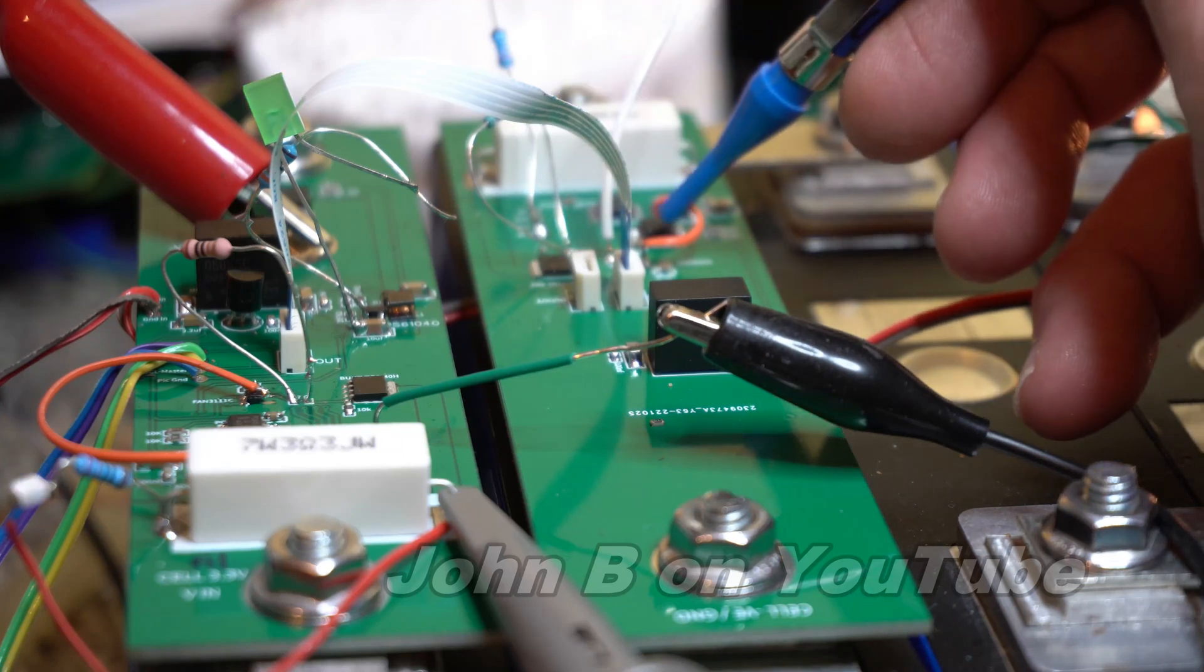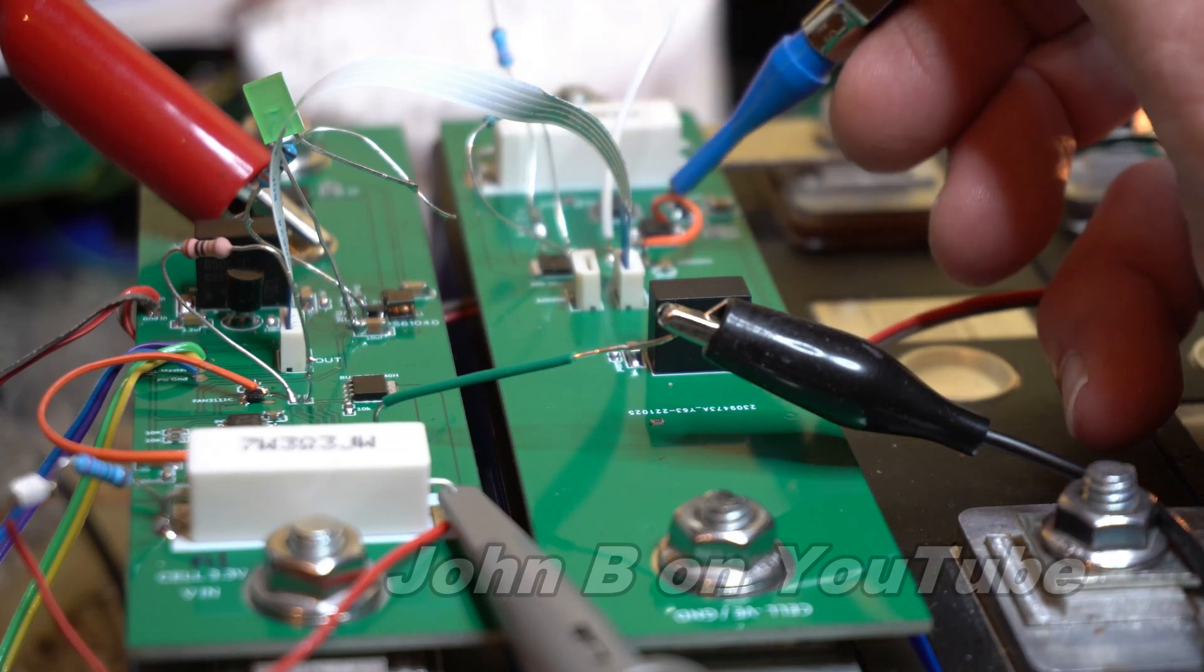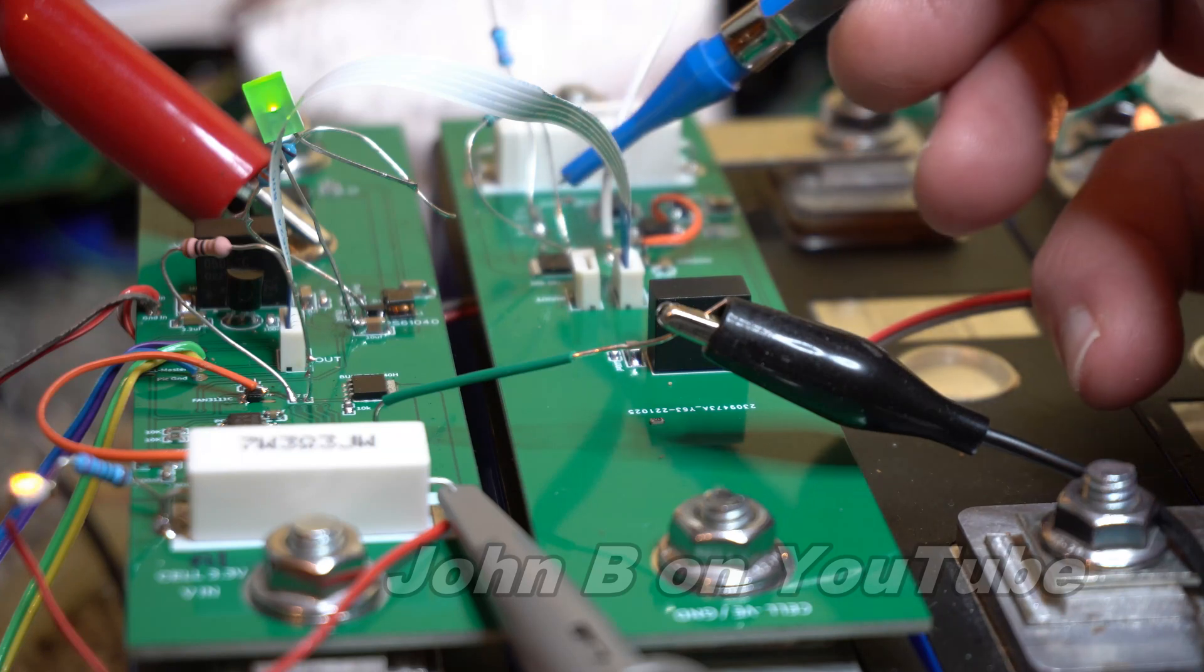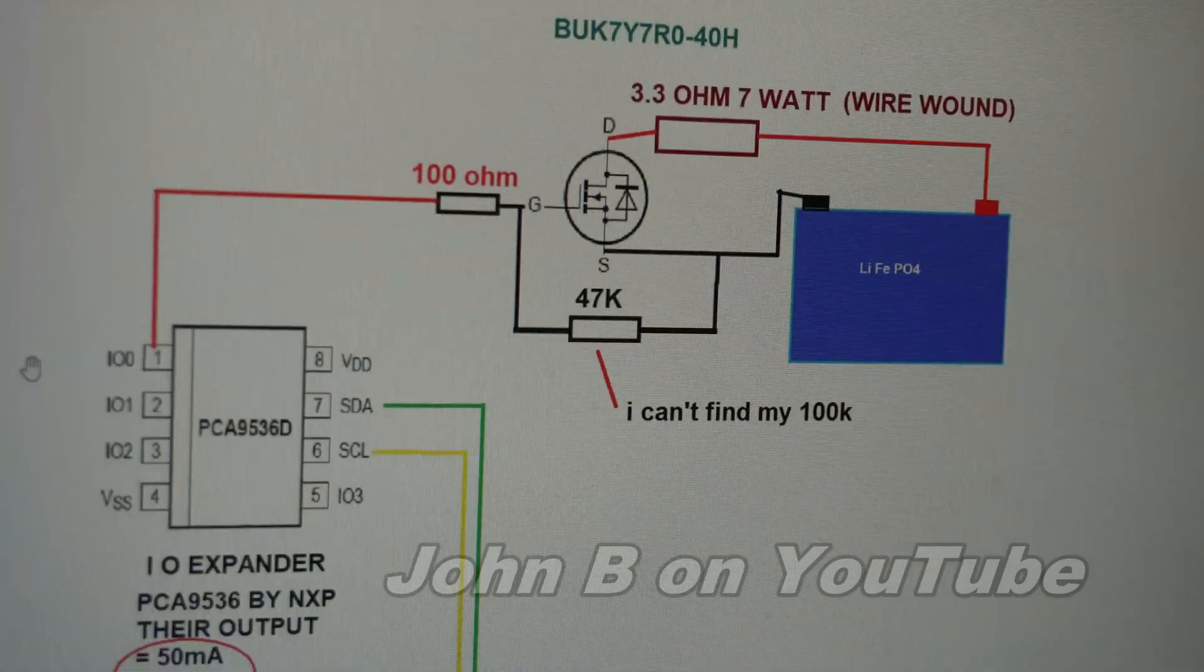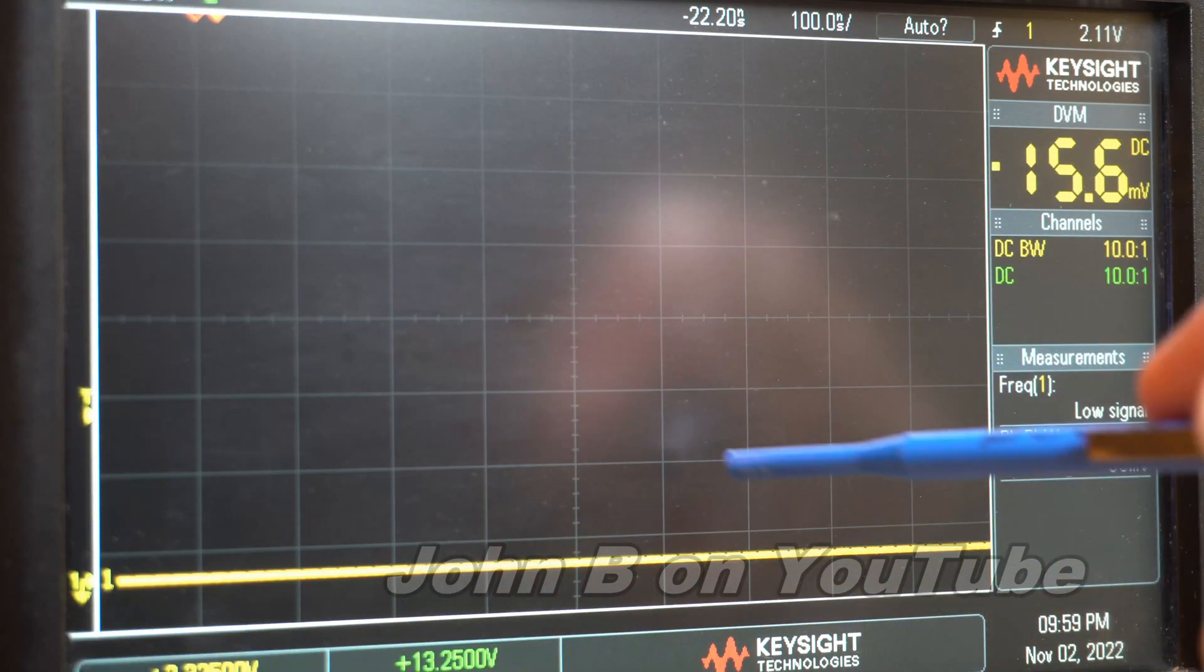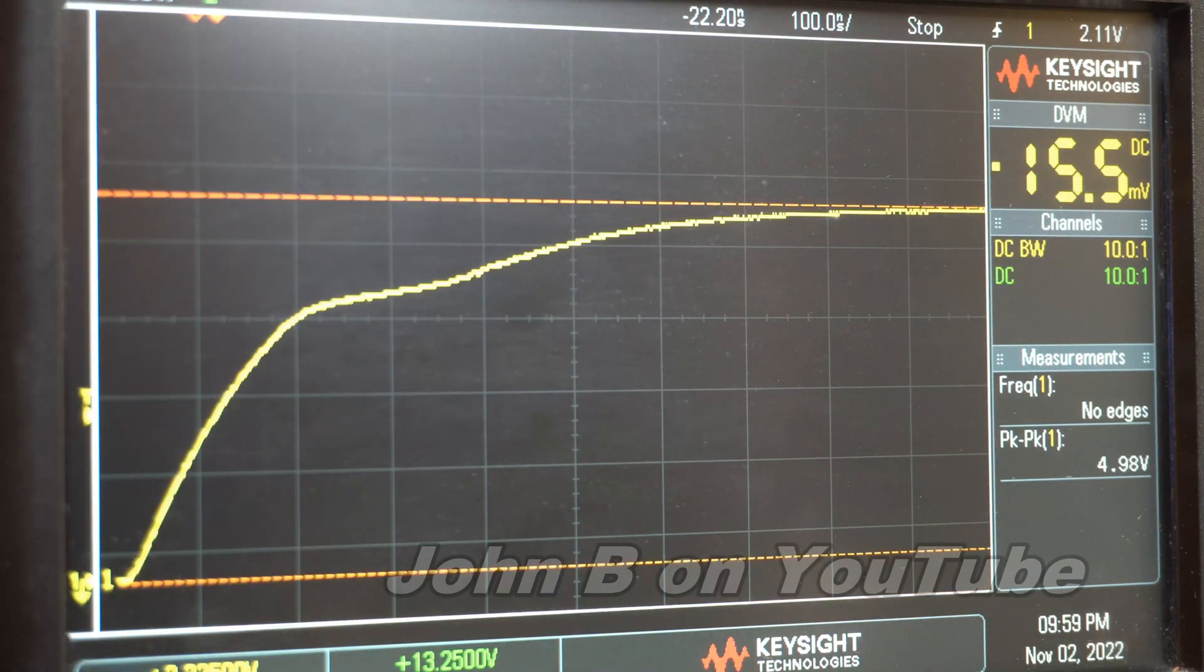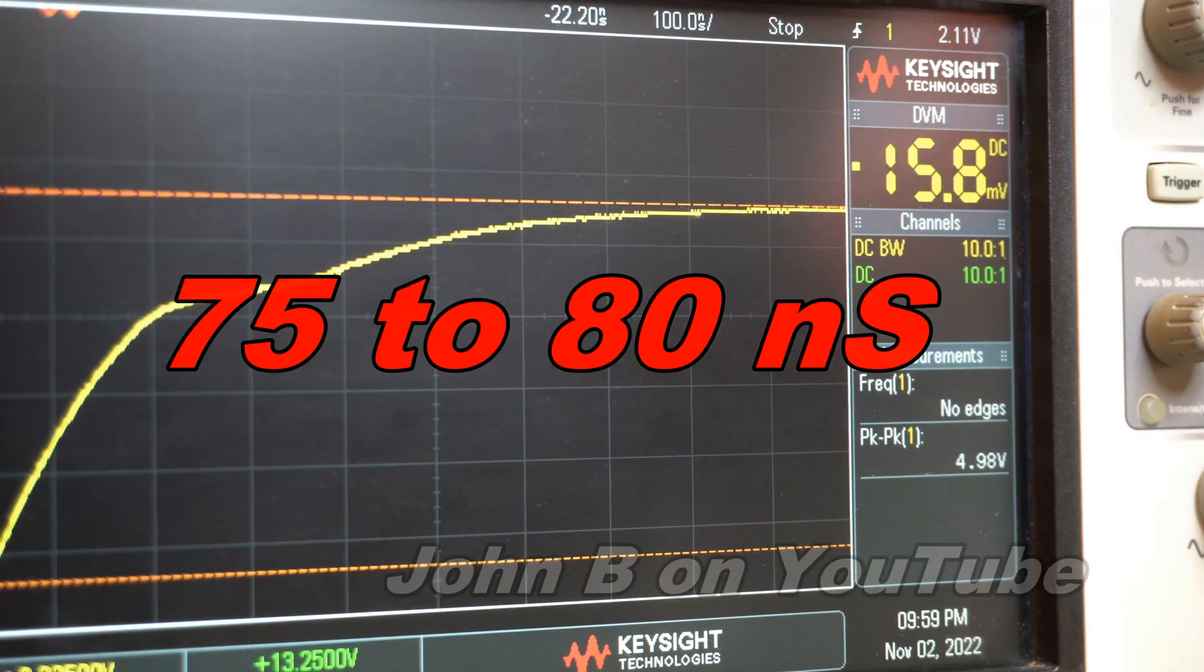So on the second board, the IO expander is running the FET directly. So a 100-ohm resistor to limit the current from this IO expander—these are 50 milliamps, so five volts divided by 50 milliamps is 100 ohms. That will slow the transistor turning on. And for the gate-to-source, I've taken out the 10k and put a 47k. Let me show you this circuit on the scope. Remember, 50 milliamps max from the IO expander. Capture this. Let me do that again, I wasn't ready.